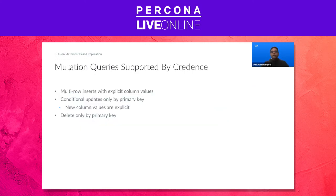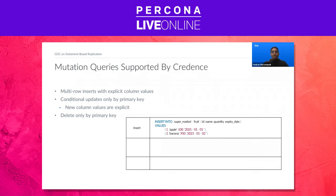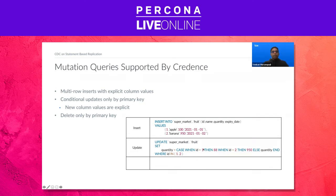Let's go over mutation queries supported by Credence. Credence supports multi-row inserts with explicit column values — all values are explicitly specified, none are computed by MySQL. Credence also supports conditional updates only by primary key; columns and their new values are explicitly specified for each row in the conditional set. For example, fruit1 and fruit2 are being updated with a new quantity specified for both, whether or not quantity has actually changed. Finally, deletes are performed only by primary key.